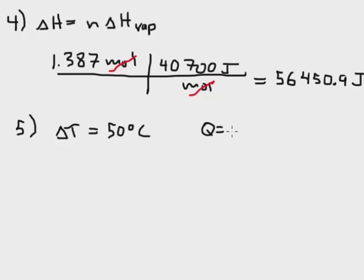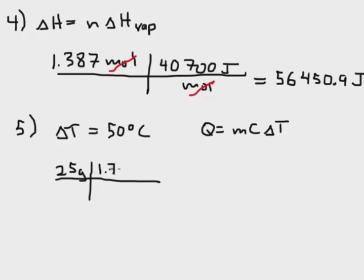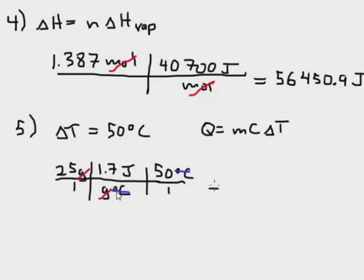Step five uses a delta T of 50 degrees Celsius — we need to heat the steam from the boiling point of 100 to the final temperature of 150 degrees Celsius. Again we use Q equals MC delta T: 25 grams, with the specific heat capacity of steam. Units cancel, and we calculate 2,125 joules for this final step.